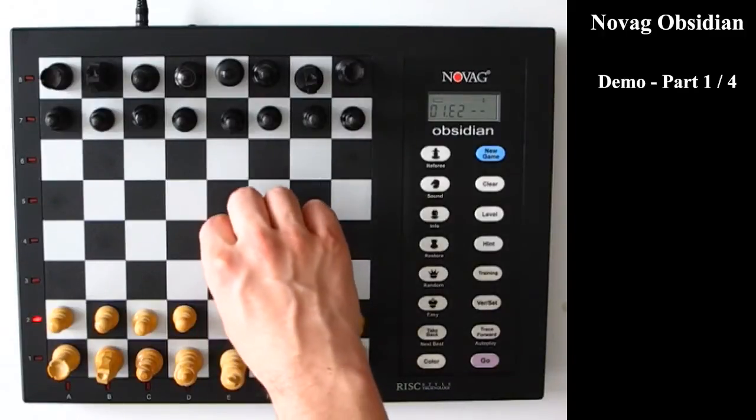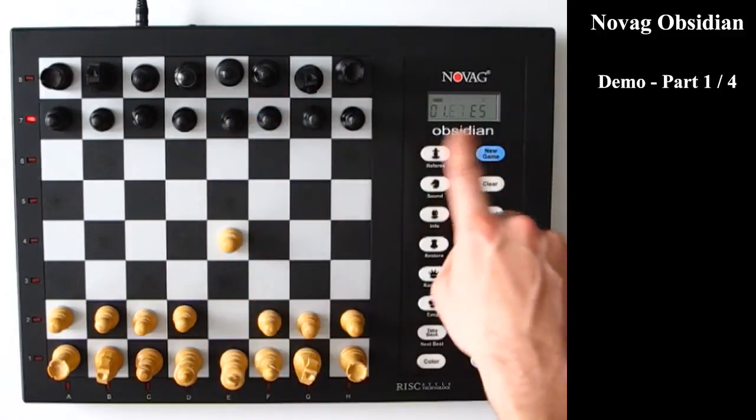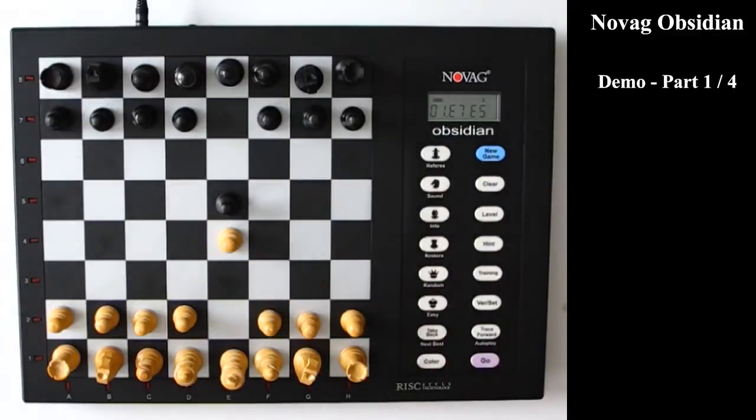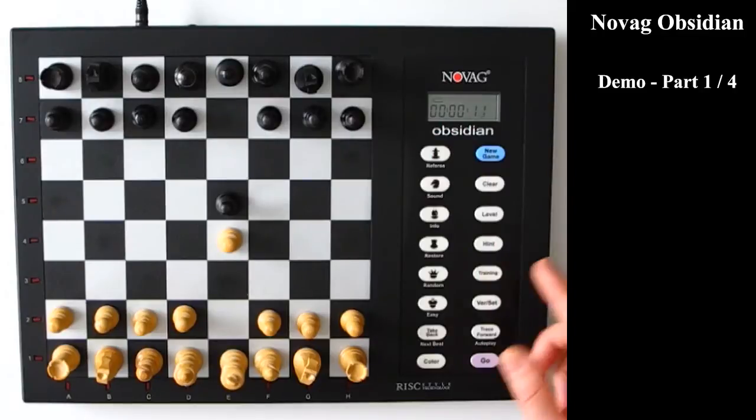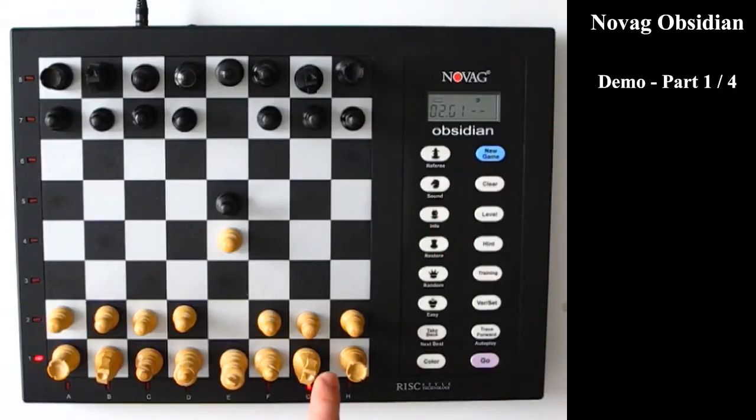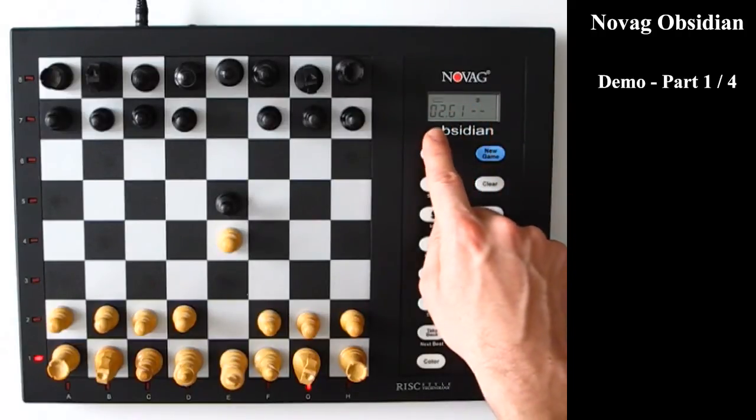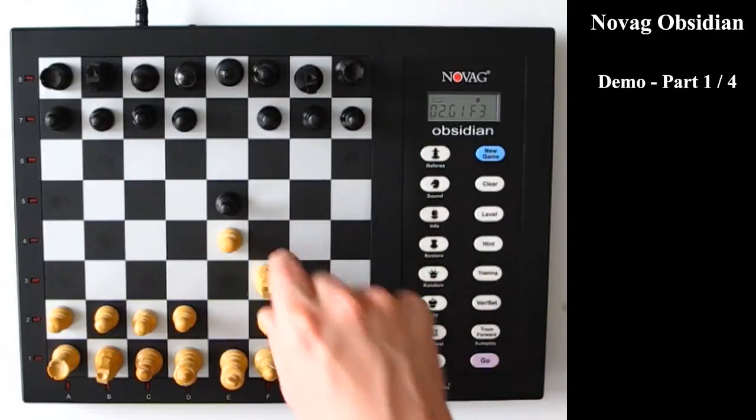So I'll just start. Here you see that the positions are indicated both by the LEDs but also on the LCD screen. You see here that there's a little rectangle in the LCD screen which indicates which color is playing. So when it's open white is playing. So I press the knight now which I'm going to move. So it indicates white knight. Second move from G1. And I'm going to put it here on F3.